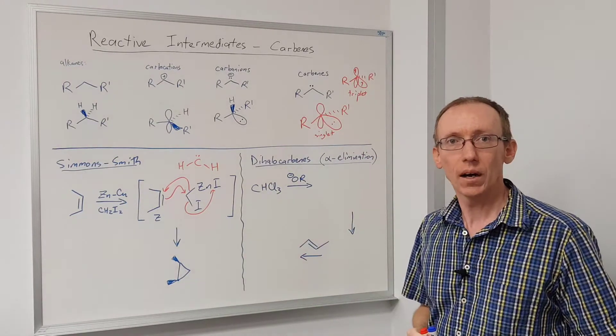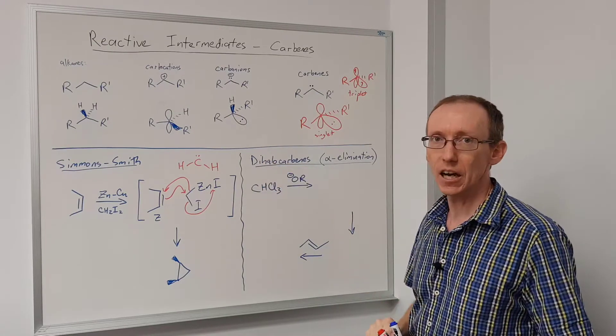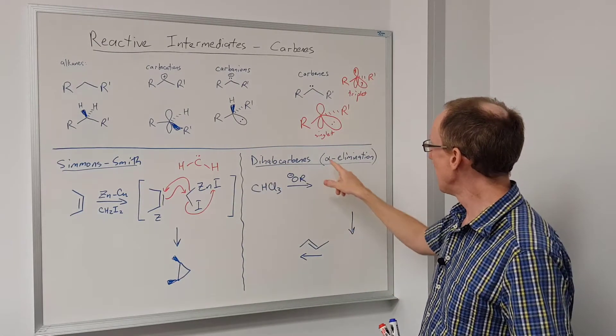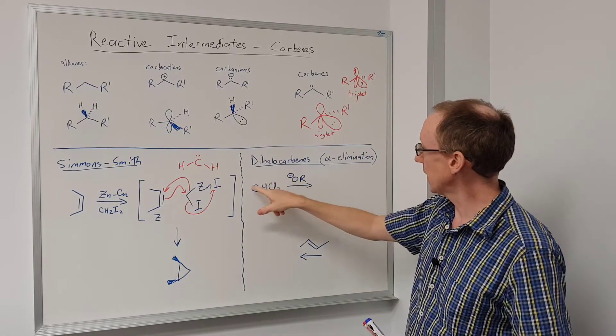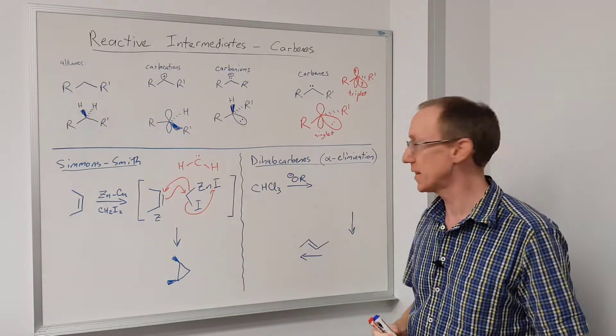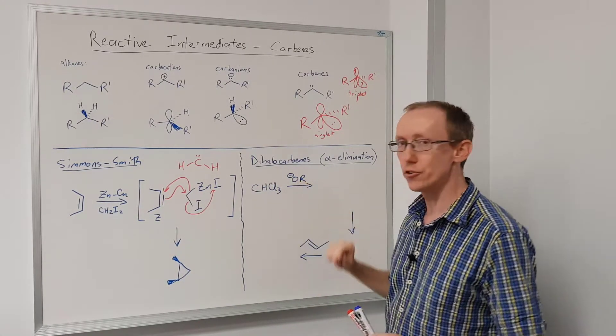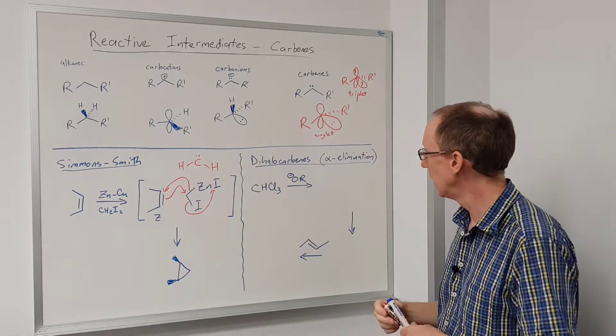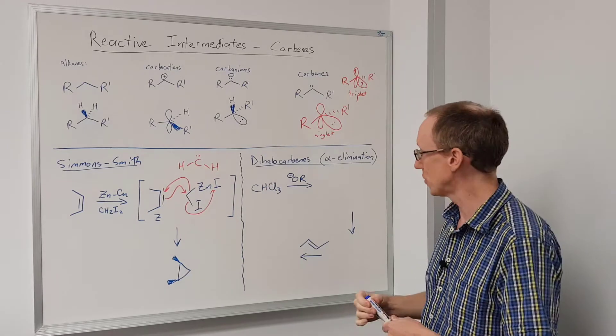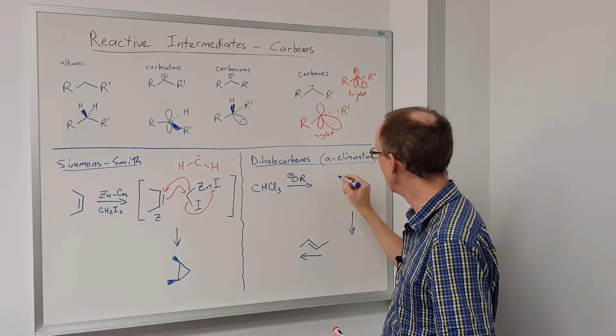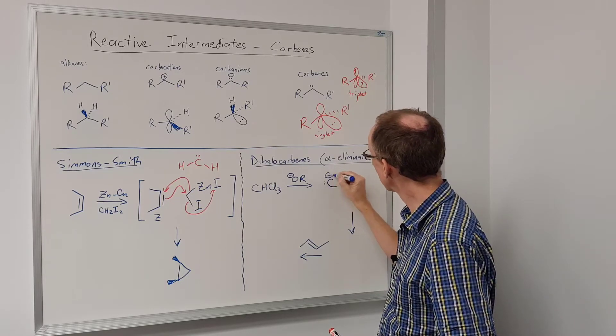One of the other simple common reactions of carbene is the formation of dihalocarbenes in their reaction, and they're formed by normally an alpha elimination. This is where we take a trihalomethane and a strong base - normally this is something like hydroxide or ethoxide or some kind of alkoxide - and that's going to deprotonate the one proton on this trihalomethane. And we're going to generate a species that looks like this.